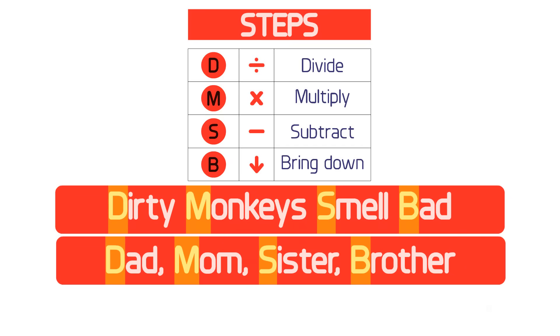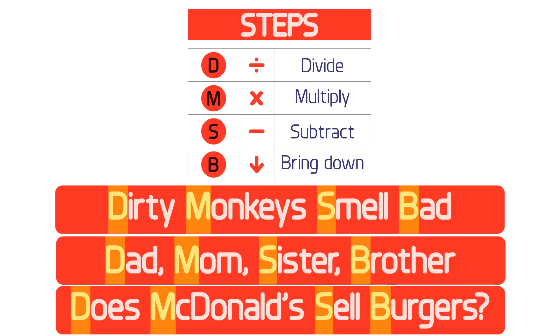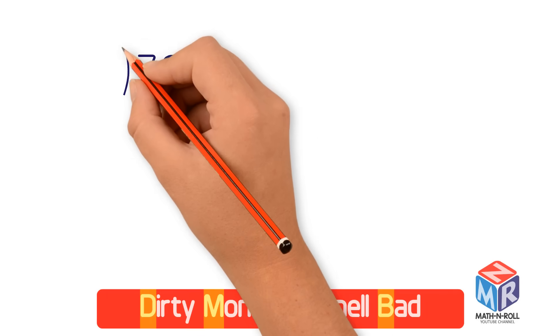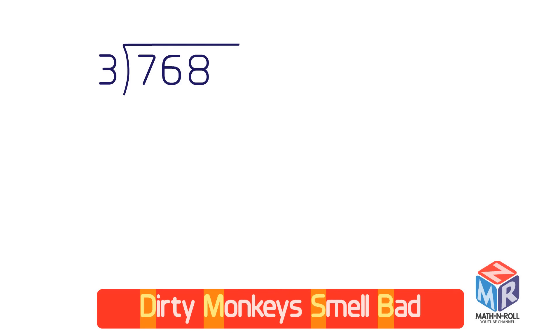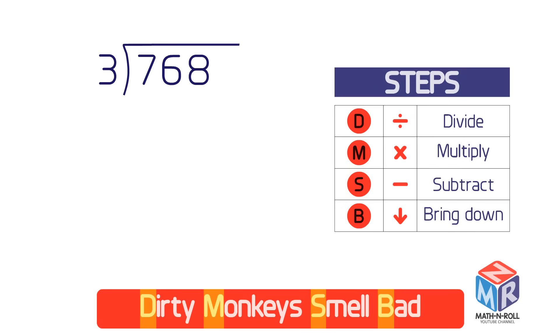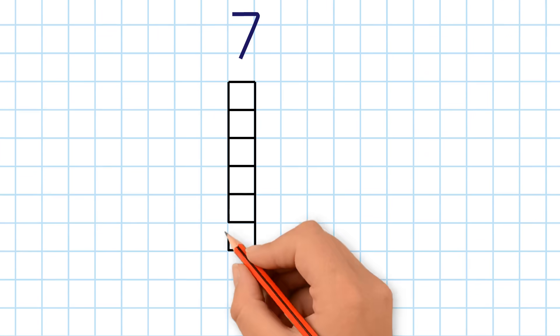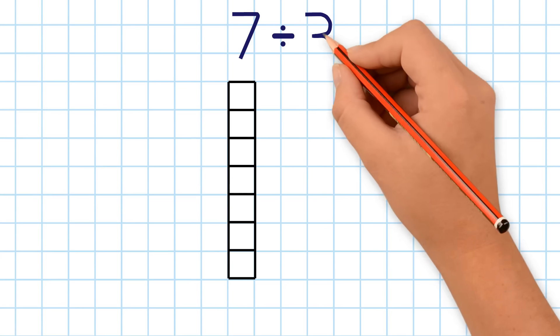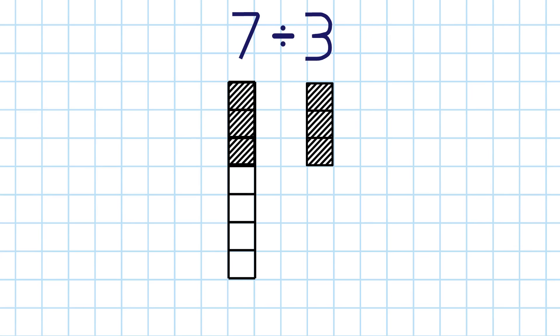Other mnemonics include 'dad, mom, sister, brother' or 'does McDonald's sell burgers.' Let's divide 768 by 3. To begin, ask how many times 3 goes into 7 — that is, what's 7 divided by 3? The answer is 2 with a little leftover.